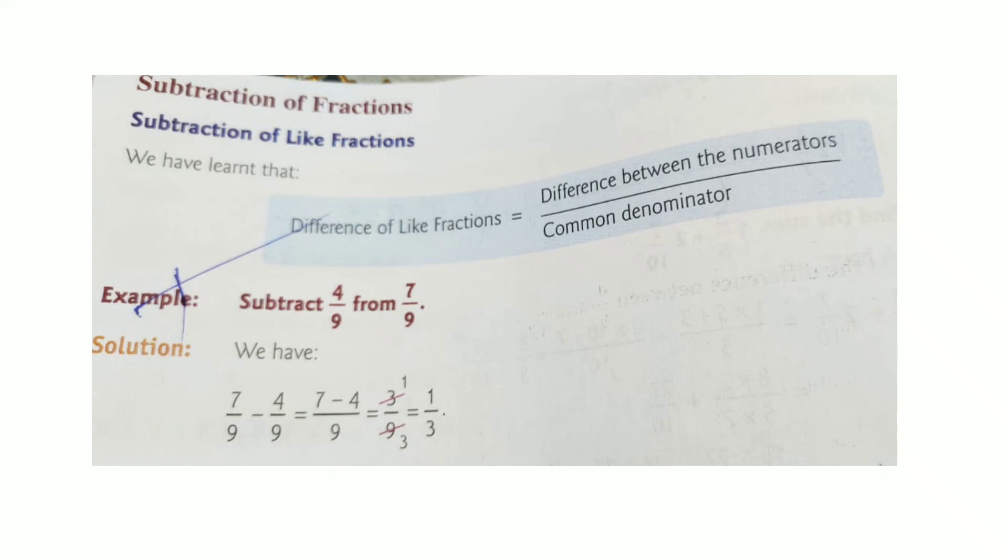And denominator is 9. Can we cancel it? Yes. By table of 3: 3 divides 3 gives 1, 3 divides 9 gives 3. So our answer is 1 by 3.